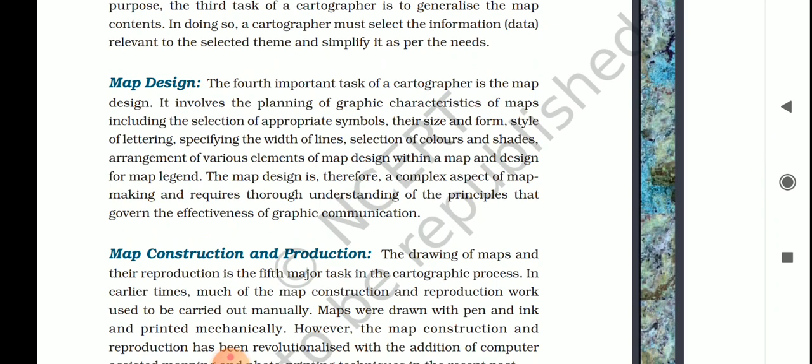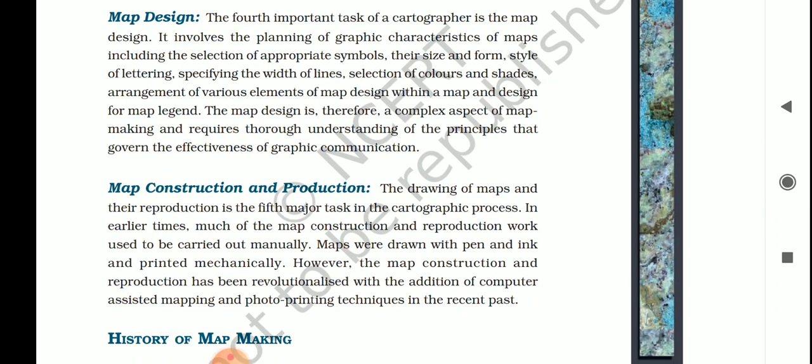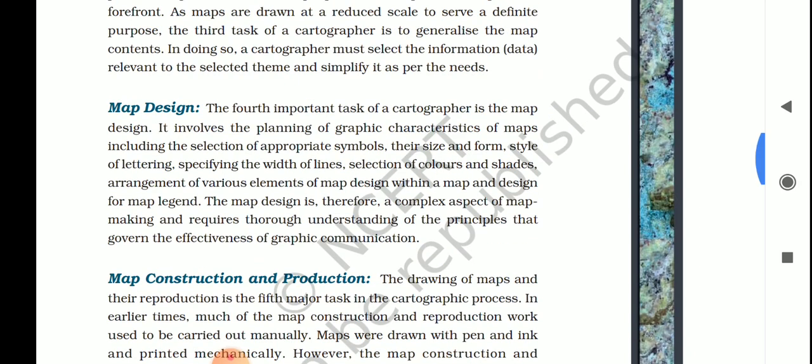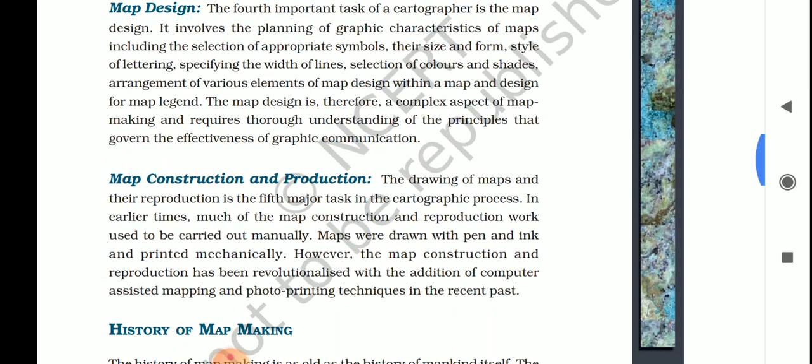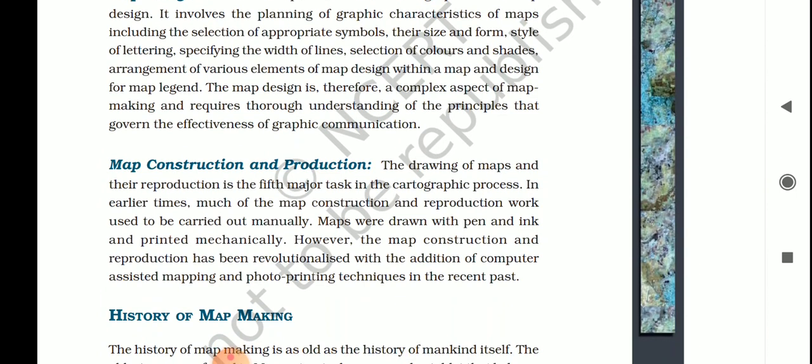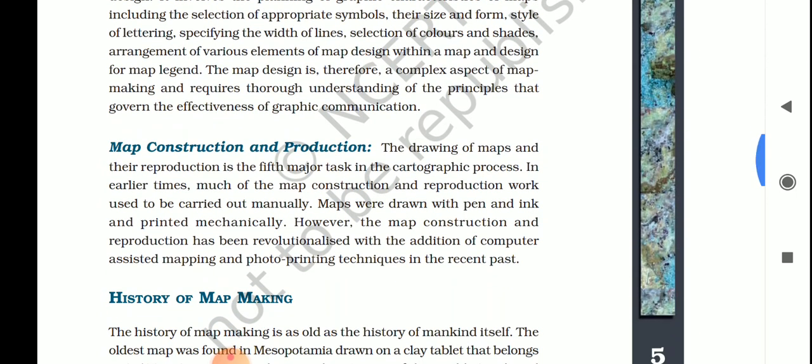Next is map design. When a cartographer draws a map, the design is very important — it involves planning the graphic characteristics of the map, including the selection of appropriate symbols, their size and form, style of lettering, specifying the width of lines, selection of colors and shades, and the arrangement of various map elements within the map.